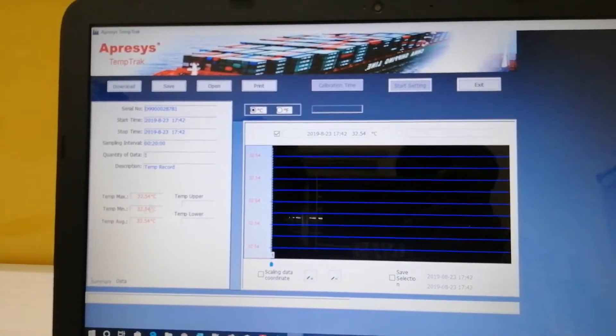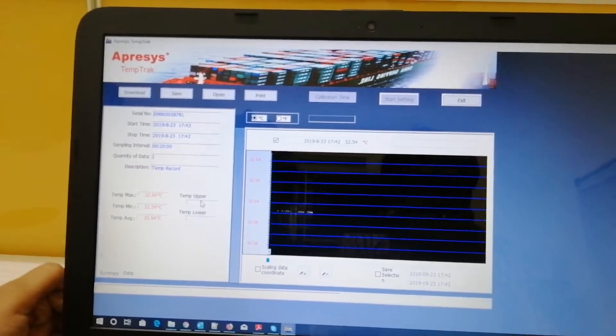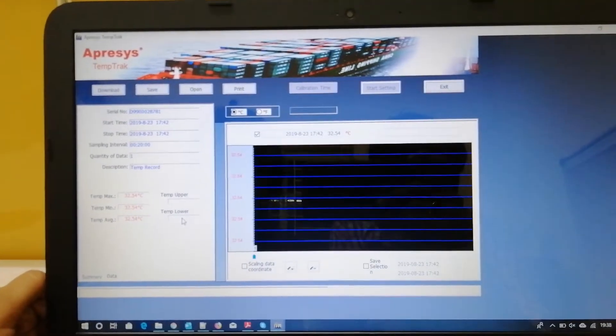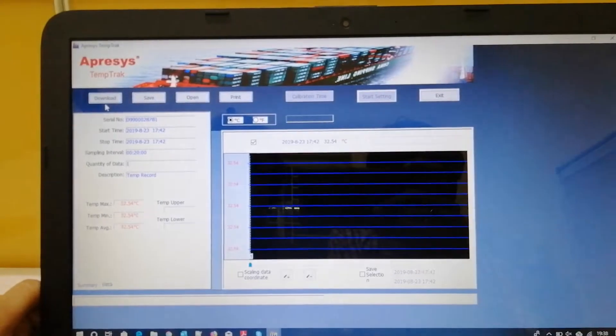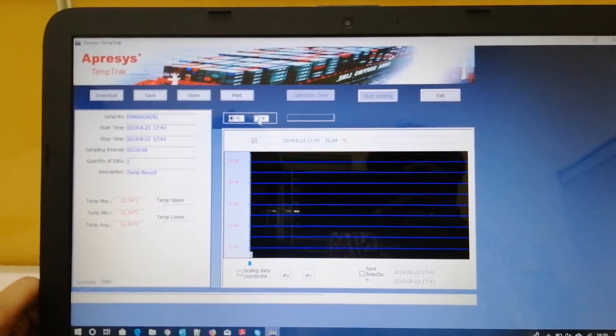This shows the temperature: maximum, minimum, and average. You can set alarm limits for upper and lower temperature. You can download and save the data, and directly print from the software.